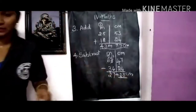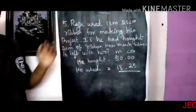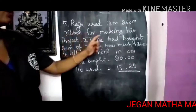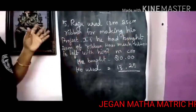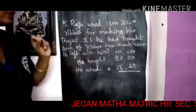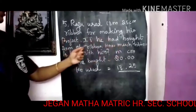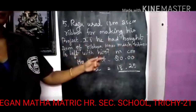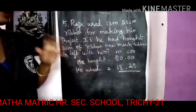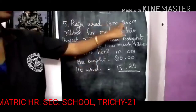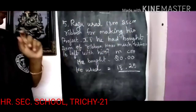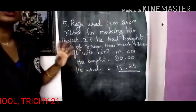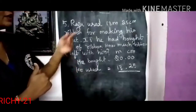Now let's see the word problem. Fifth one — word problem: Raju used 30 meter 25 centimeter ribbon for making his project. He had bought 20 meter of ribbon. How much ribbon is left with him? So Raju bought 20 meter of ribbon and used 30 meter and 25 centimeter for his project. You want to find out what is remaining, so you are going to subtract: total ribbon minus used ribbon.